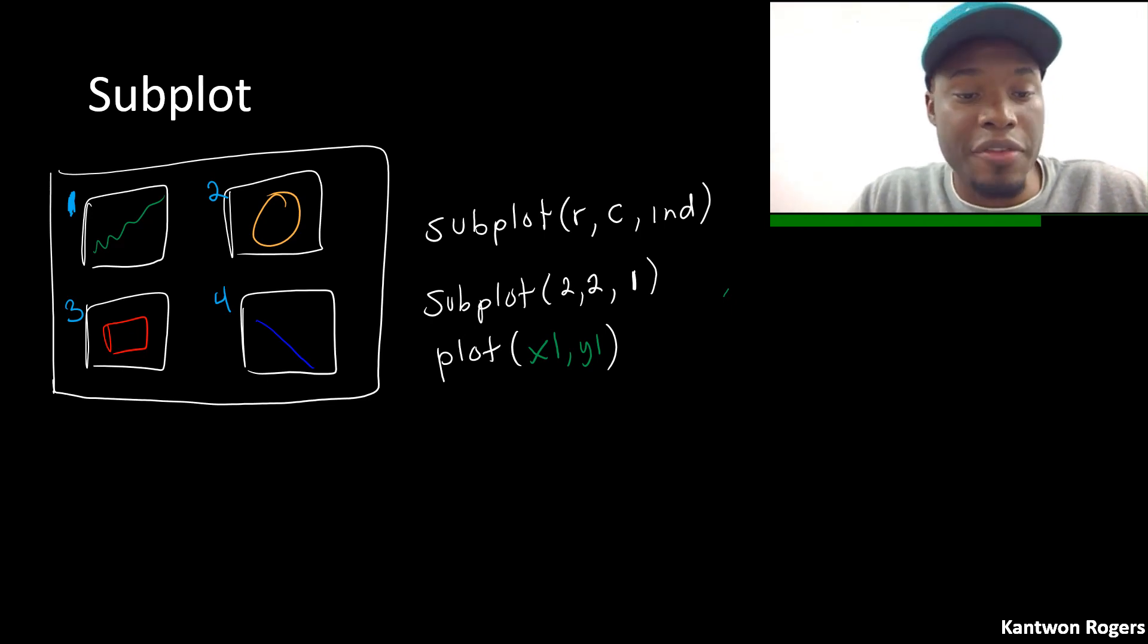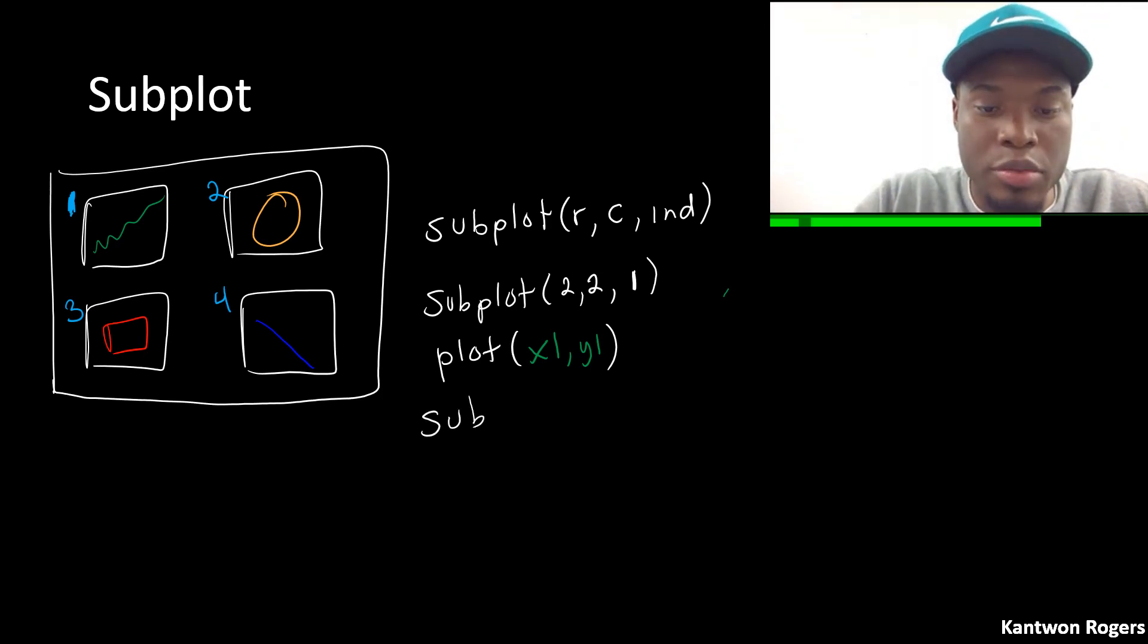And now if let's say for instance I wanted to then move over to the blue line, I can do that. I'll just say subplot, so I have to move over to another subplot. So it's still a two by two. And then now I want to affect the fourth position. So then I can say plot x four y four.